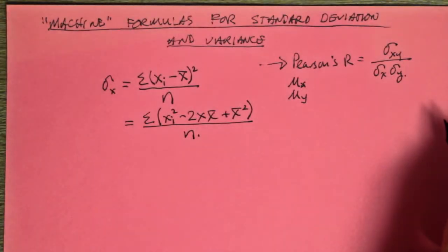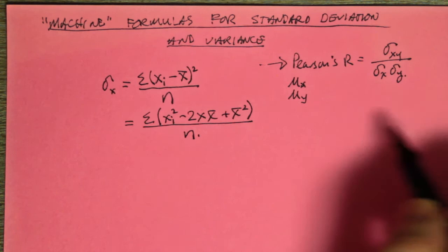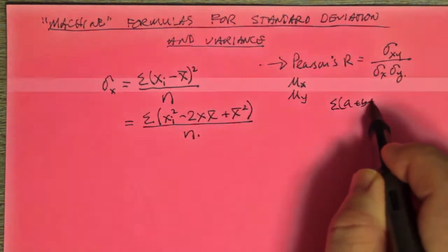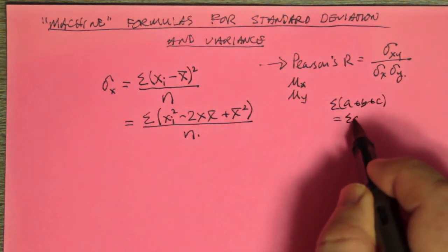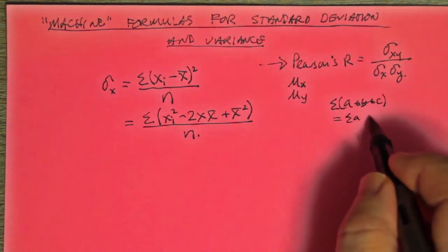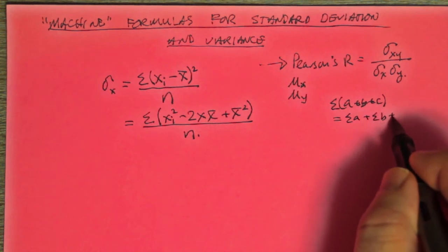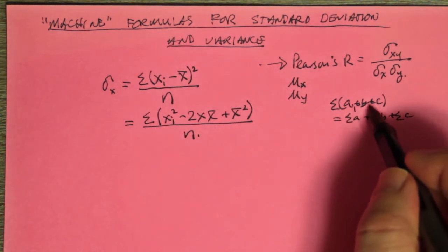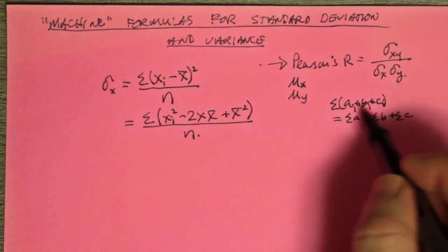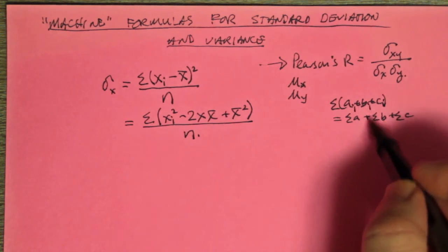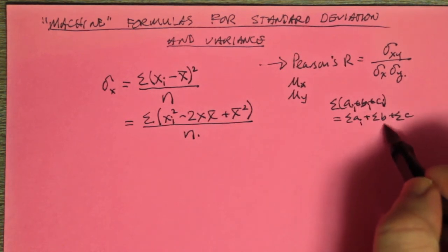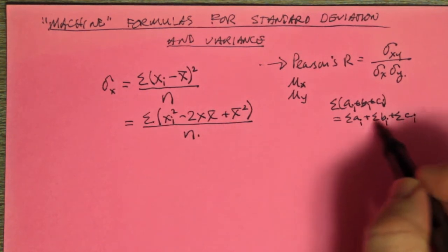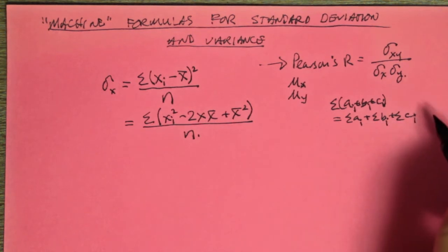We can now distribute the summation across. If we have the summation of A plus B plus C, this is equal to the summation of the A terms, plus the summation of the B terms, plus the summation of the C terms. Meaning, if we had a whole bunch of A's, B's, and C's to add together, it's the same thing as adding the individual A, B, and C terms and then adding the results together.